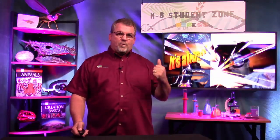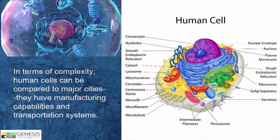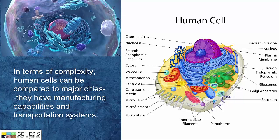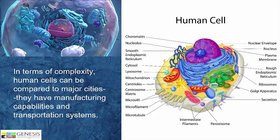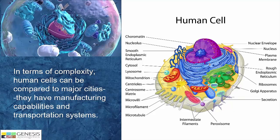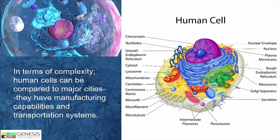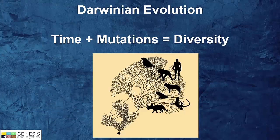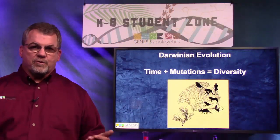Reality check. When you look at living creatures and things like human cells, you discover they are really complicated. When Darwin was around and looked into a microscope, all he could see was just a little blob. Today, we know that inside these cells are little factories and transportation systems — all kinds of different things going on in there. There is no way that this could have created itself. And yet evolutionists insist that if we have billions of years, it can happen through mutations.